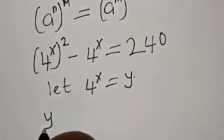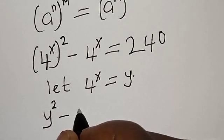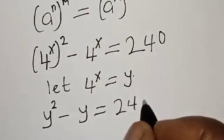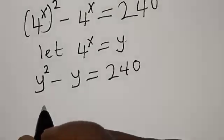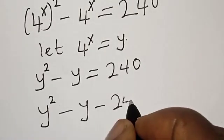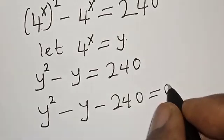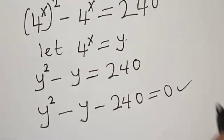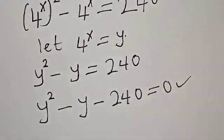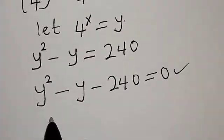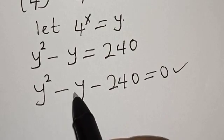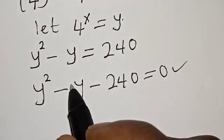Let y equal 4 raised to power s. Then we have y squared minus y is equal to 240. Now let's equate everything to 0: we have y squared minus y minus 240 is equal to 0. This is a quadratic equation and we can solve this using factorization method or the quadratic formula, but in this case I'm going to use the factorization method. We look for two numbers so that their product gives minus 240 and their sum gives minus 1, because the coefficient of y is 1.